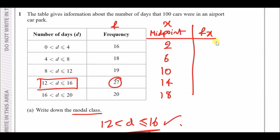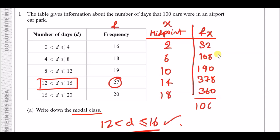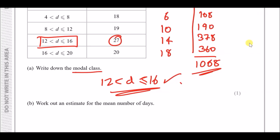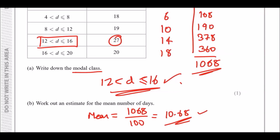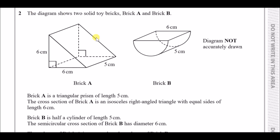To get FX, multiply frequency by midpoint: 16 × 2 = 32, 18 × 6 = 108, then 190, 27 × 14 = 378, and 20 × 18 = 360. Total all the FX values to get 1068. The mean equals total FX divided by total frequency: 1068 ÷ 100 = 10.68 days. That's question one done.